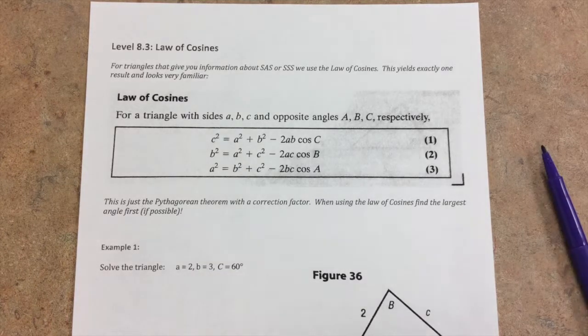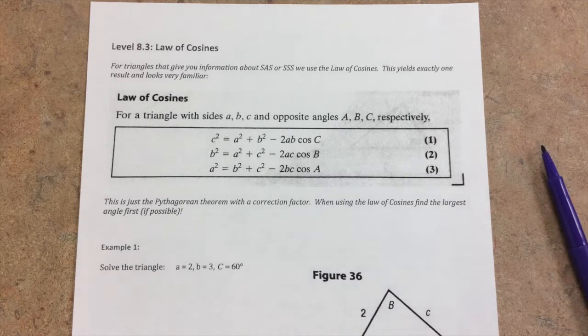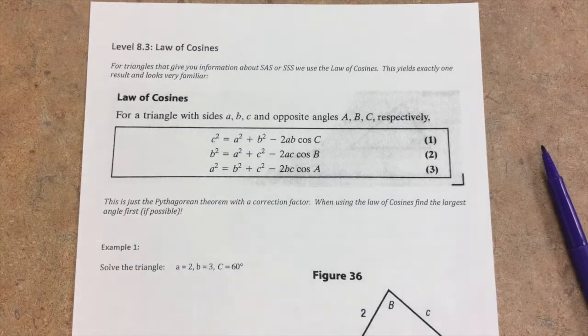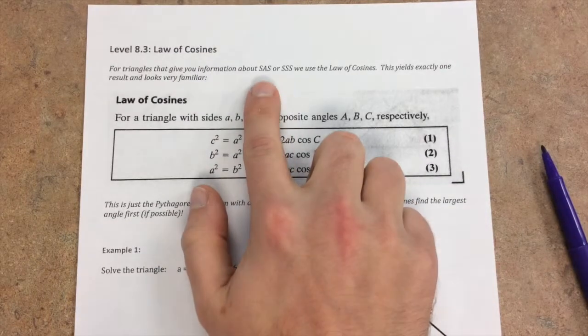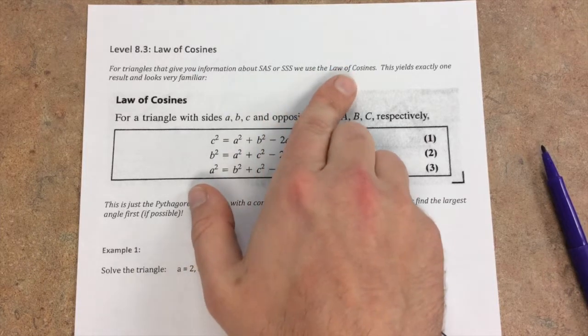With Law of Cosines, we will only use this once because it's a little more complicated, and it's when we have side angle side or side side side. So when we have side angle side triangles or side side side triangles, we use the Law of Cosines.